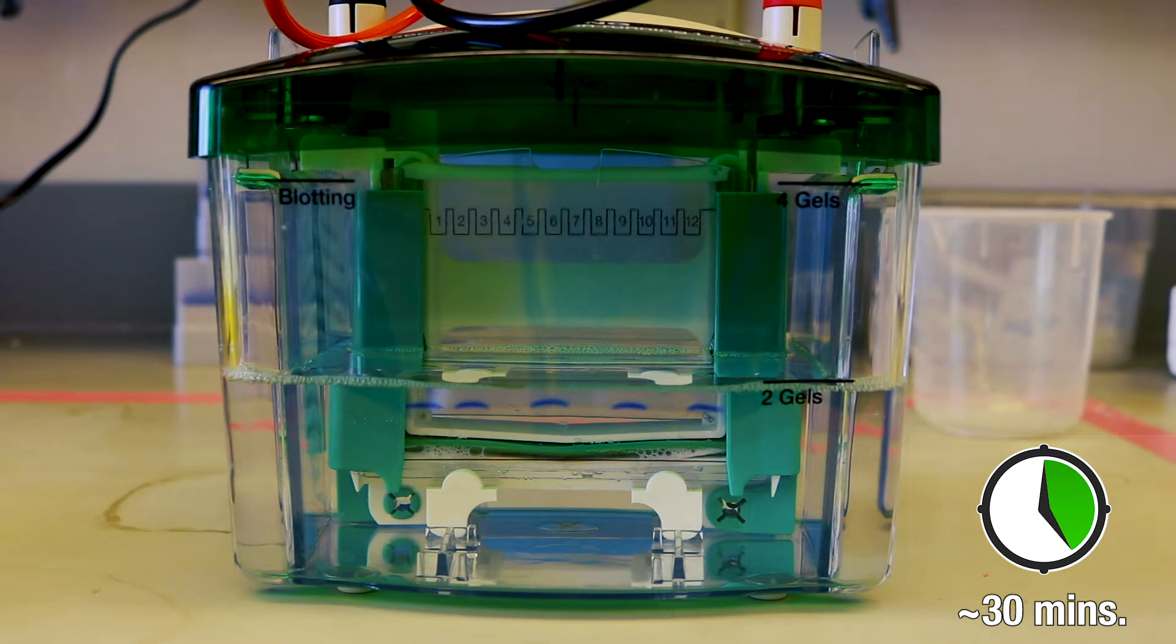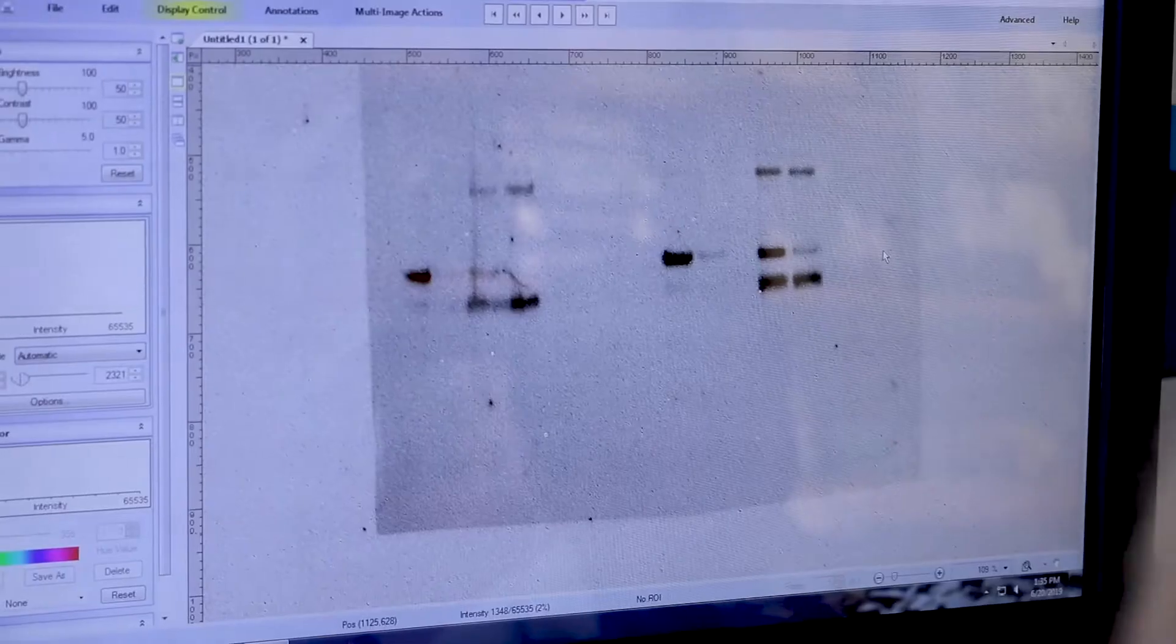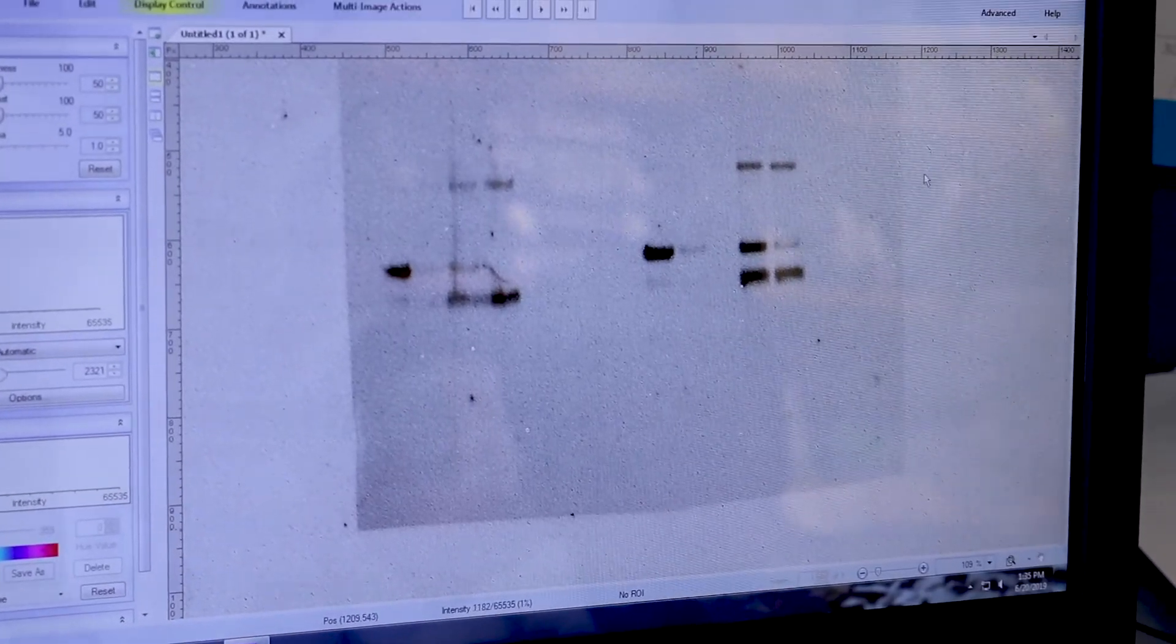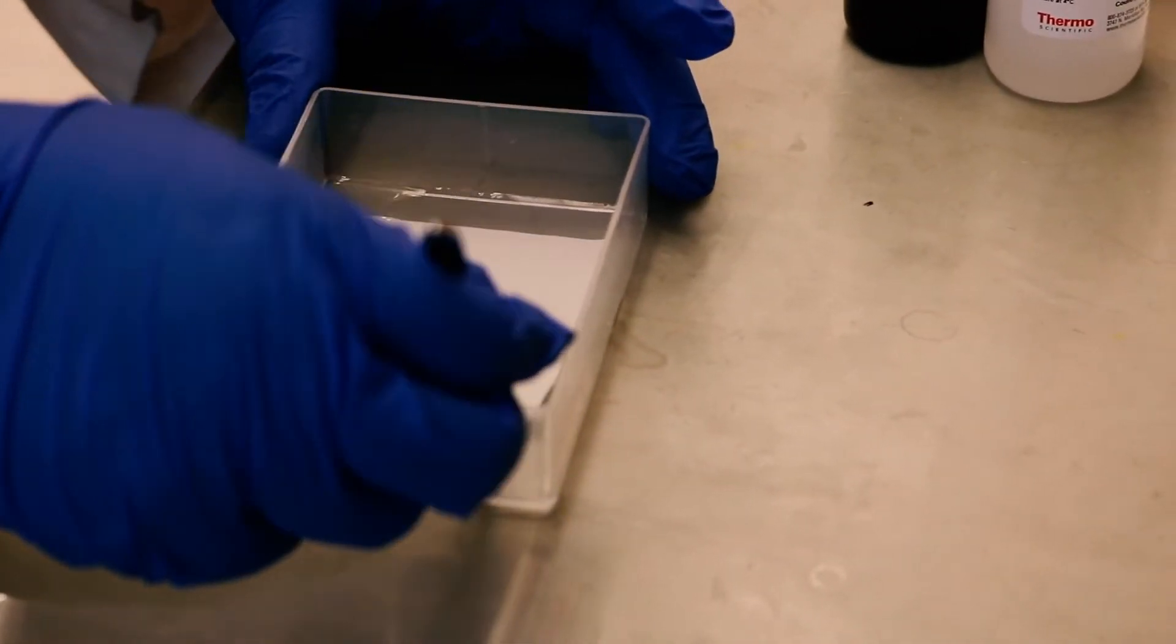The results of both a Western and a DNA agarose gel look similar—you get black bands on a white background—but they're telling you very different things. One's telling you about a gene, the other one's telling you about the protein.